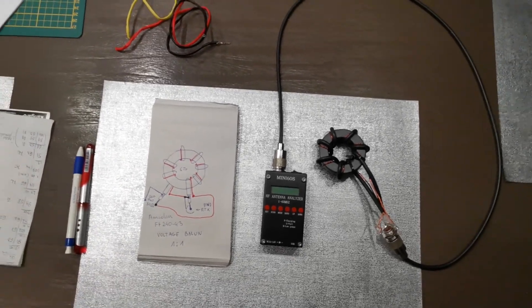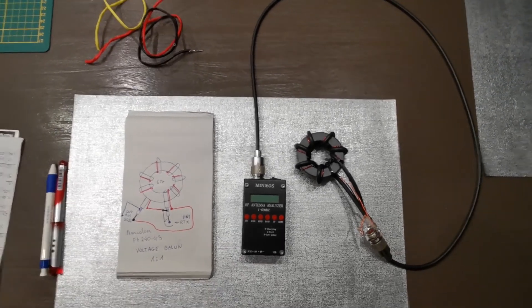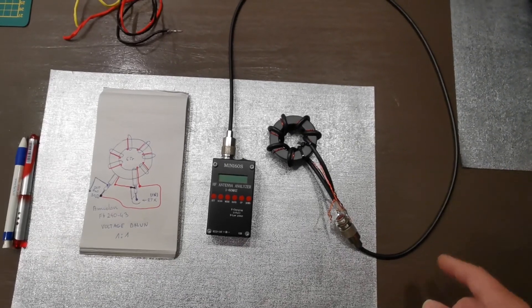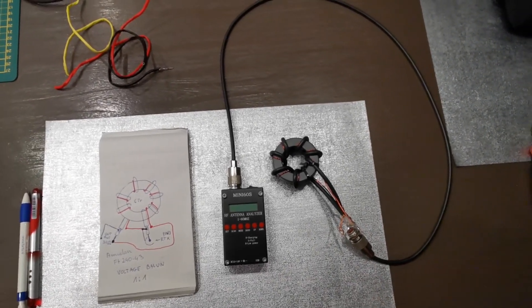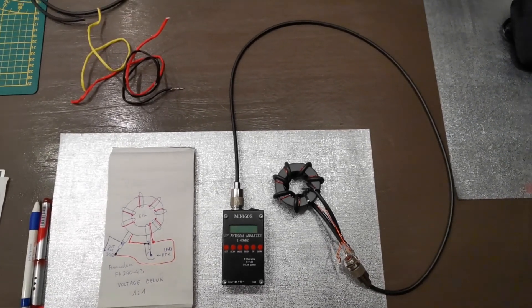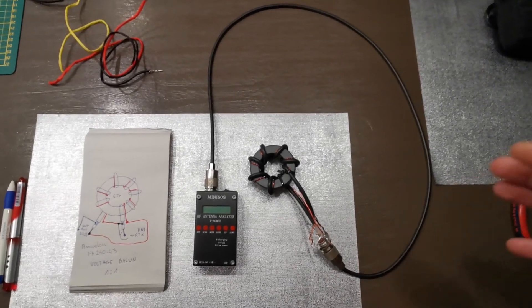Hello everyone, this is Papa Alpha 1 Romeo Alpha Foxtrot Rafael. I want to show you a simple 1:1 voltage balun. I couldn't find good information on the internet about how to make it.